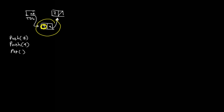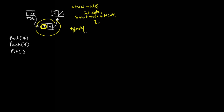Now let us design the push function. We will make top-of-stack a global variable. The structure will be: struct node with int data and struct node star next. Using typedef, we write typedef struct node node, so we can just write node instead of struct node. Then we declare node star top-of-stack and initialize it to null.